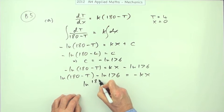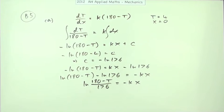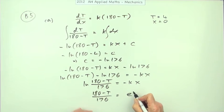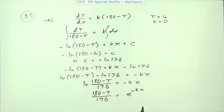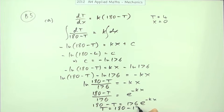So ln((180 minus t) over 176) equals negative kx. We're almost there — get rid of the log by applying the exponential: (180 minus t) over 176 equals e to the negative kx, so 180 minus t equals 176 e to the negative kx, and therefore t equals 180 minus 176 e to the negative kx.